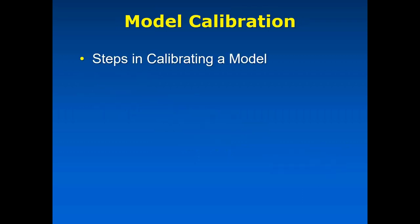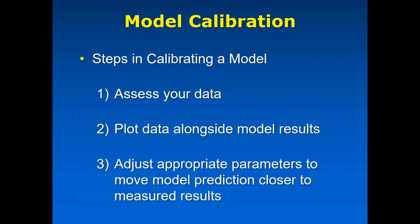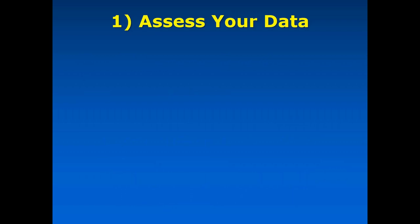To do a calibration, there are several steps. The first step is to assess your data — take a quantitative look at the quality of that data and determine what parts to use for calibration. Then you plot that data alongside what the model is predicting. There are lots of methods for doing that. Then you adjust the appropriate parameters to move the model prediction closer to the measured results. The big question is: which parameters do I adjust and in which direction?